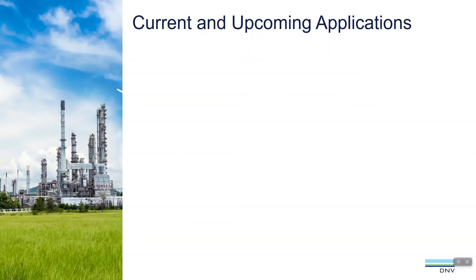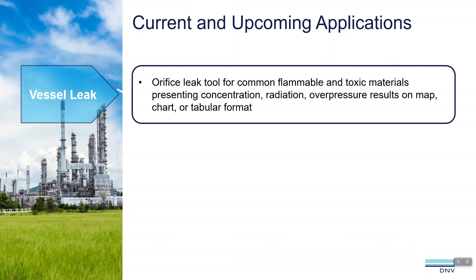The current and upcoming applications that are part of FAST Online. The VESALEAK model is an orifice leak tool for common flammable and toxic materials, presenting concentration, radiation, and overpressure results on a map, in a chart, or in tabular format.